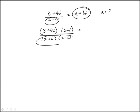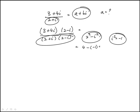So the denominator, using the difference of squares, this would be 2 squared minus i squared. i squared is minus 1, so this becomes 4 minus minus 1, which is 5.